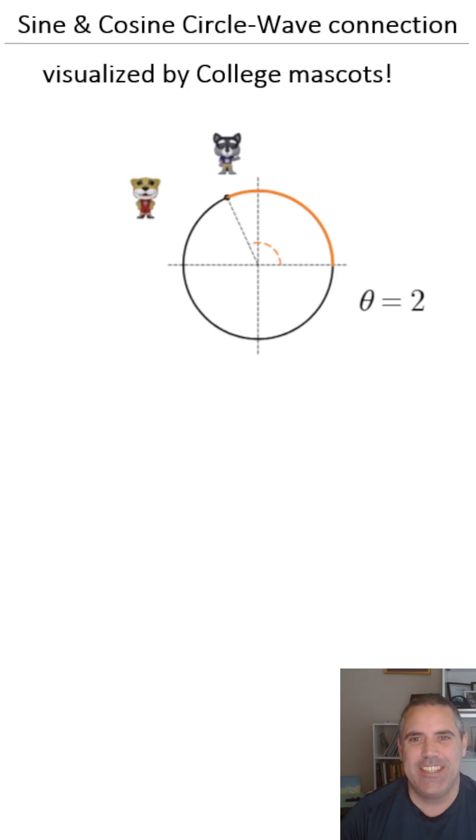Here I have Harry the Husky, the UW mascot, and Butch the Cougar WSU mascot, and I've tasked them with a job. So as the angle changes going around a circle, I've asked Butch to stay in line with the Y coordinate, and I've asked Harry to stay in line with the X coordinate, and you can see him bouncing back and forth there.